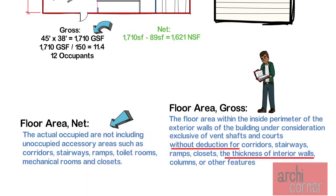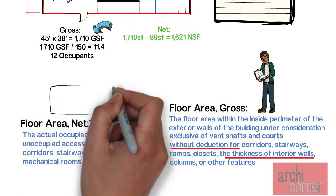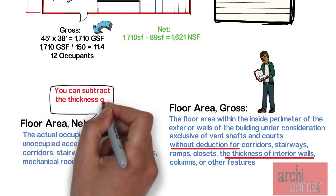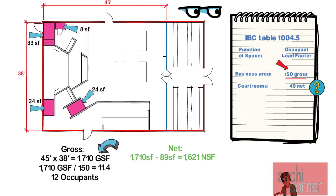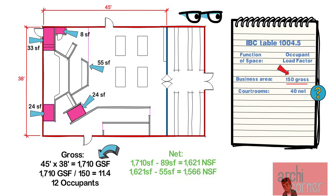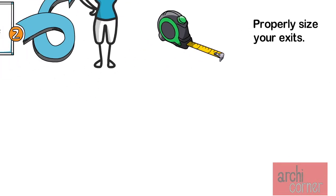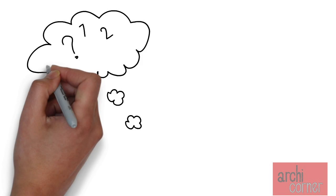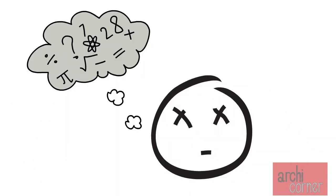This is where it gets interesting: the gross definition says we cannot subtract the thickness of walls, but in the net definition there is no mention of this. Because the IBC excluded that wording from the definition of net, we get to subtract all the interior wall thicknesses as well. In our plan, the light gray walls are all interior walls of the courtroom. The wall thickness for all the gray walls adds up to 55 square feet. Therefore, we have a net square footage of 1,566. Dividing that by 40, we get — coincidentally — 40 occupants.